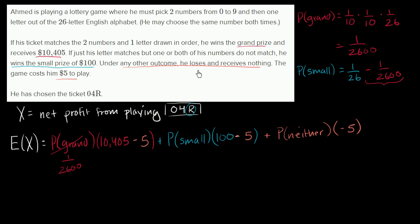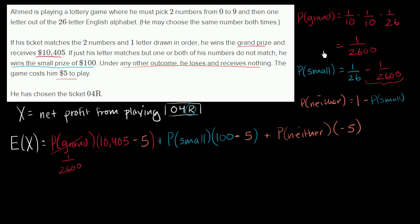The probability of neither — essentially losing — is everything else: 1 minus the probability of the small prize minus the probability of the grand prize. These are all possible outcomes, so they must add up to 1, or 100%.